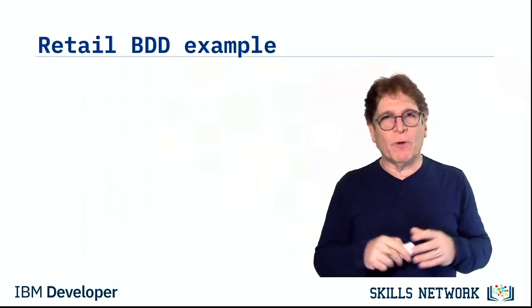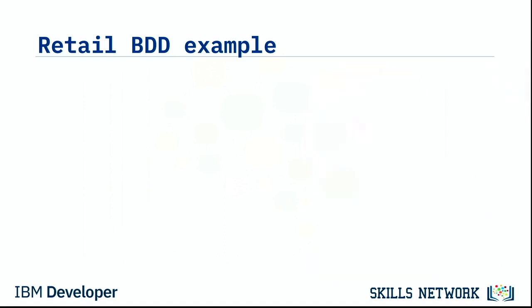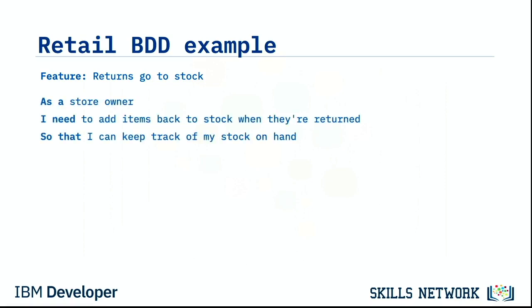Let's look at an example from a retail store. These are called feature files or feature documents — you'll have one feature per document and many scenarios describing that feature. There's only one scenario in this example, but there could certainly be more to cover all the permutations. This feature is called 'Returns go to stock,' and it describes the behavior of the system when a customer returns an item they have purchased. Notice it uses the 'as a, I need, so that' syntax — the same one we use in writing our user stories.